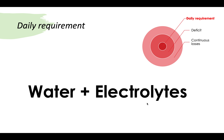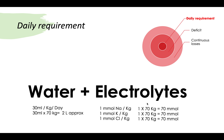The first thing to discuss is the daily requirement. There are two essential things you cannot do without every day: water and electrolytes. How much water do you need every day? You need normally 30ml per kg per day. For example, someone weighing 70kg: 30ml multiplied by 70 gives approximately two to two and a half liters.